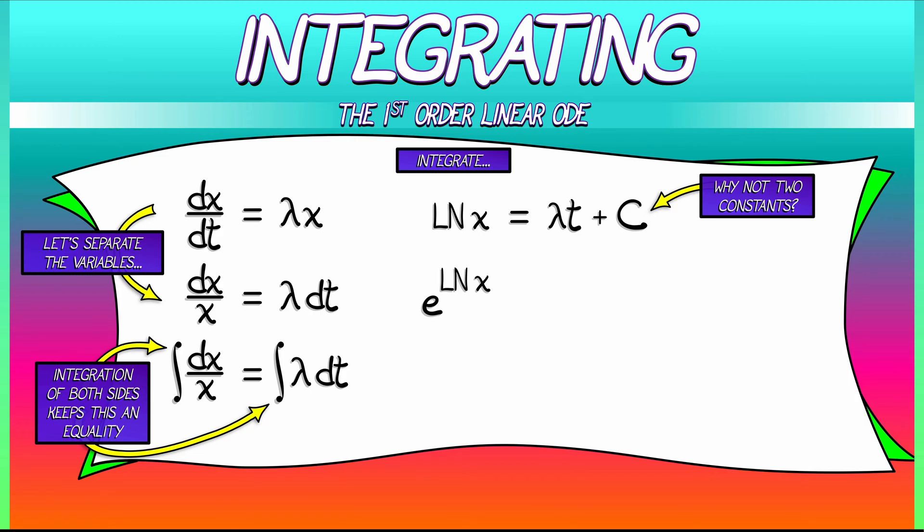On the left, we'll have e to the log of x. We have to do the same thing to the right-hand side. So we have e to the quantity lambda t plus C. That exponential on the right, we can split up using exponent laws into e^(λt) times e^C.